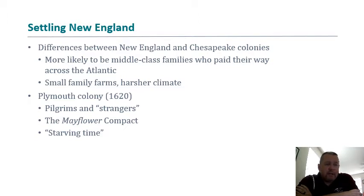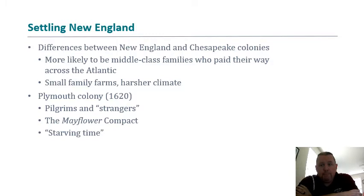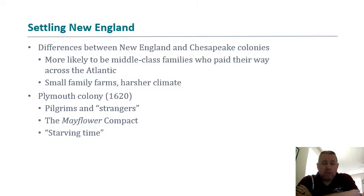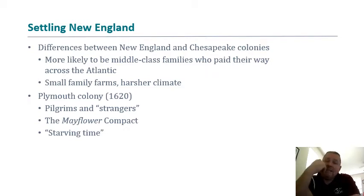New England is a little different from your Chesapeake colonies. Within New England, you generally had more middle-class families of European descent who were paying their own way — you don't have the same level of indentured servanthood. In the New England area, commercial farming is not really feasible because the growing season is so short. It doesn't mean you can't grow crops in Massachusetts, but you don't grow crops for a significant amount of the time, whereas down in the South you can have almost two planting and harvest seasons per year.